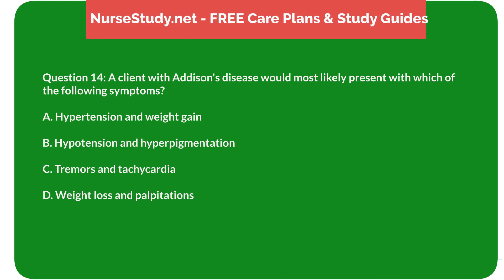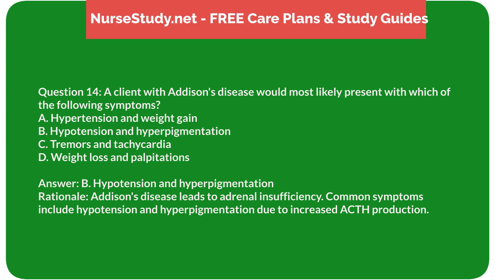Question 14: A client with Addison's disease would most likely present with which of the following symptoms? A) Hypertension and weight gain, B) Hypotension and hyperpigmentation, C) Tremors and tachycardia, D) Weight loss and palpitations. Answer: B, Hypotension and hyperpigmentation. Rationale: Addison's disease leads to adrenal insufficiency. Common symptoms include hypotension and hyperpigmentation due to increased ACTH production.